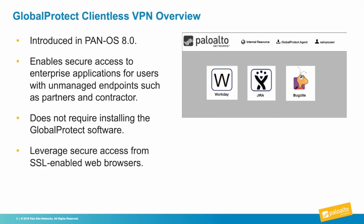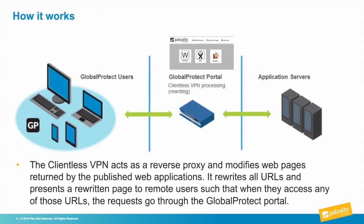On the firewall side, the firewall will host the GP Portal page, which the remote users will navigate to. This GP Portal page will be pre-setup by you to allow users to access certain web applications — either internal apps, such as your internal ESM server, or internet apps, such as Google Drive or Office 365. When the remote user clicks the application shortcut, the firewall will act as a reverse proxy, rewriting all URLs to restrict access only through the GP Portal.